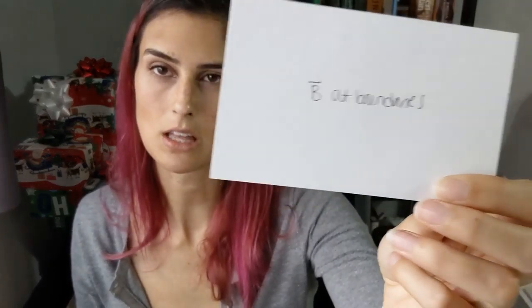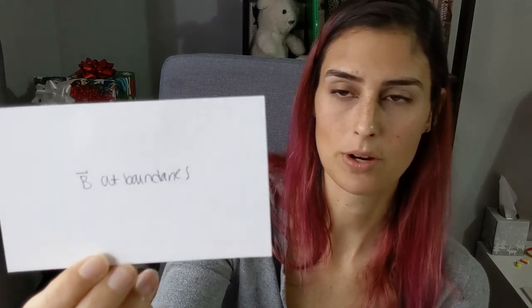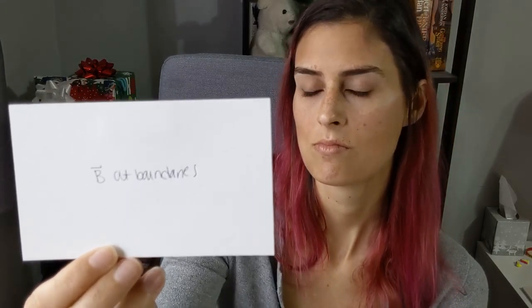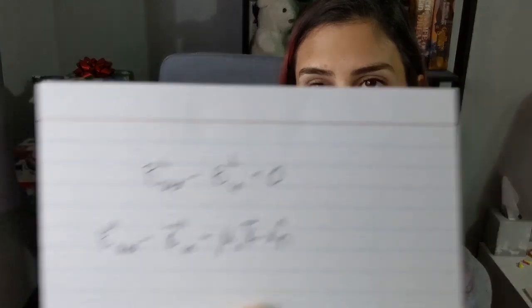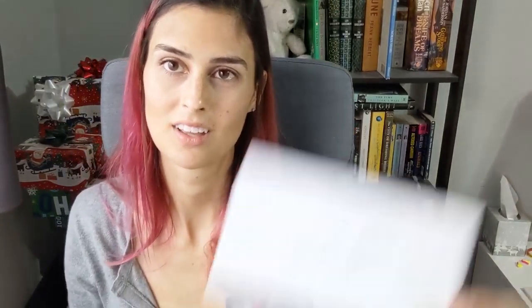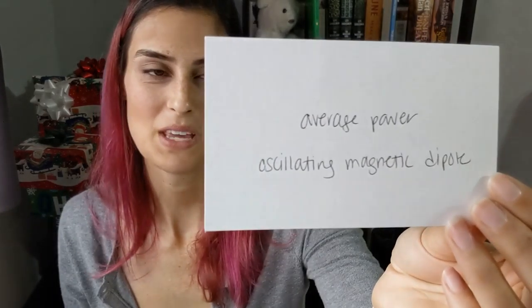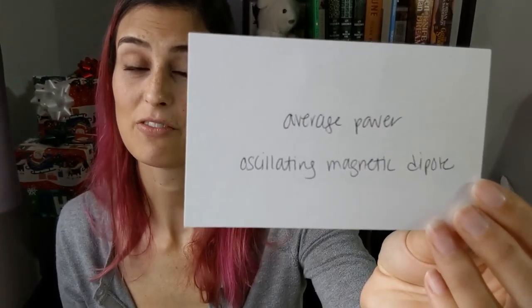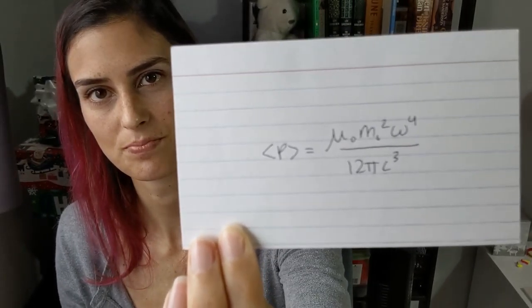Magnetic field at a boundary: the perpendicular component B out minus B in equals zero, and for the parallel component B out minus B in equals mu naught K cross n-hat. The average power of an oscillating magnetic dipole: P average equals mu naught m naught squared omega to the fourth over 12 pi C cubed — another one of these random equations with lots of variables to track.